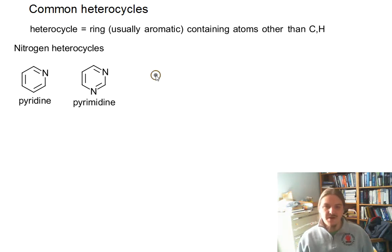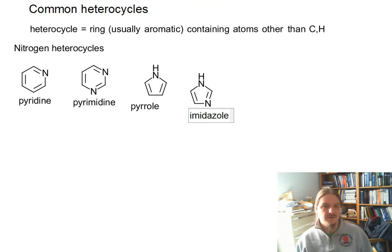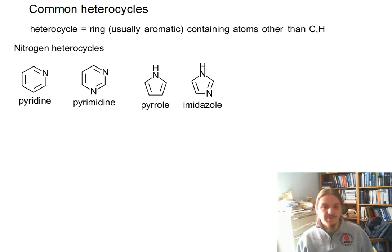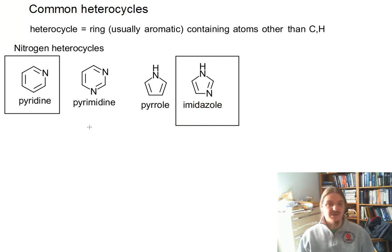In the five-membered ring world, we first have pyrrole, and then imidazole is a five-membered ring with two nitrogens in it. And both pyridine and imidazole are compounds commonly used as bases in organic reactions. You may have actually seen and heard about these compounds before.